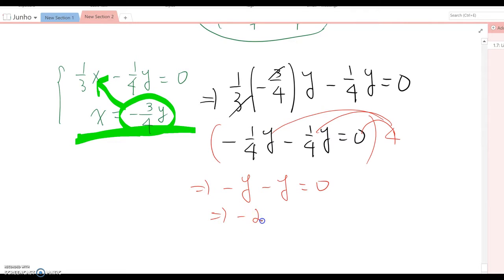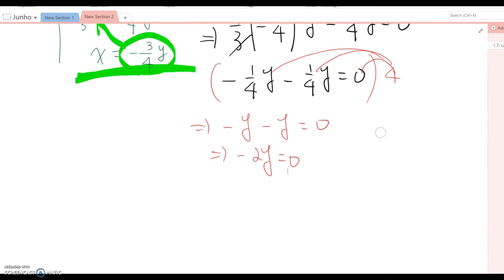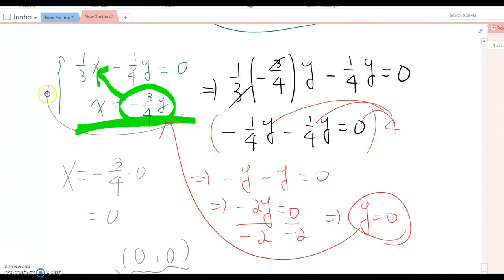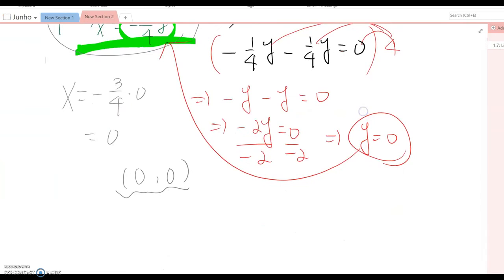Negative 2y equal to 0. Therefore, when you divide by negative 2, then y becomes 0. Now plug 0 into here because x is already defined, so we can find x value very easily. x equal to negative 3 over 4 times 0, which means 0 as well. Therefore the answer becomes 0 comma 0, and this means those two lines intersect at the ordered pair 0 and 0.